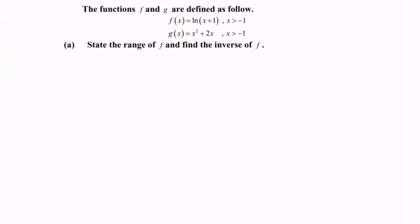Hello everyone, welcome to my channel. In this video, I'm going to discuss an example for functions and graphs. Given the functions f and g are defined as follows: f(x) is equal to ln(x + 1) with domain x greater than negative 1, and g(x) is equal to x squared plus 2x with domain x greater than negative 1.